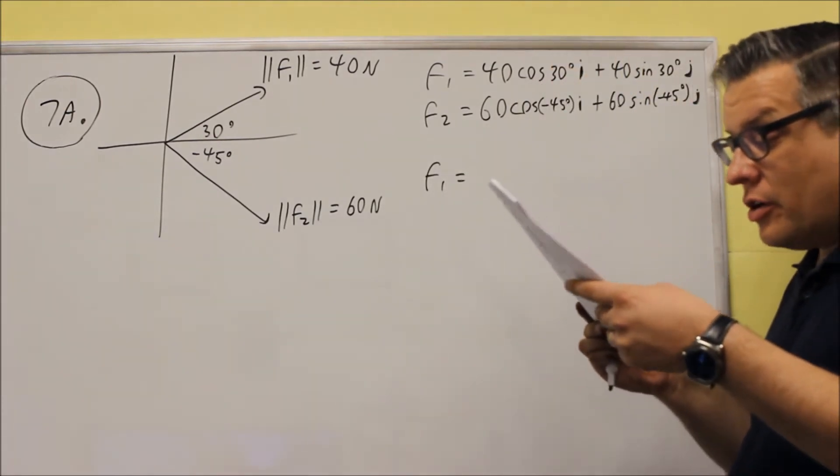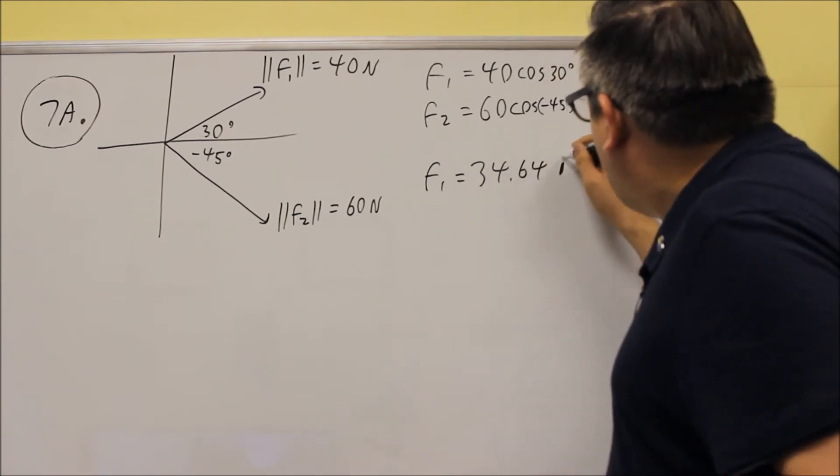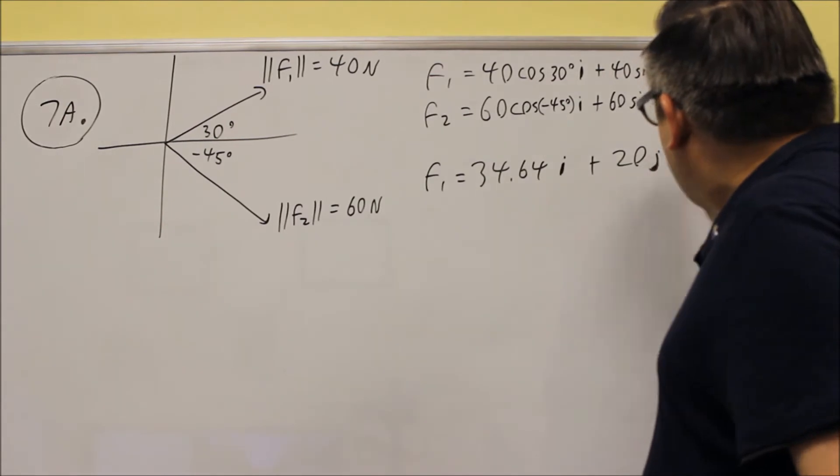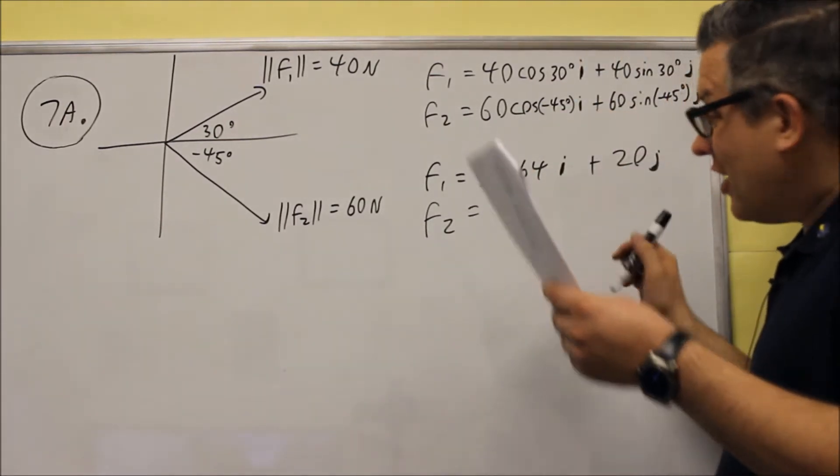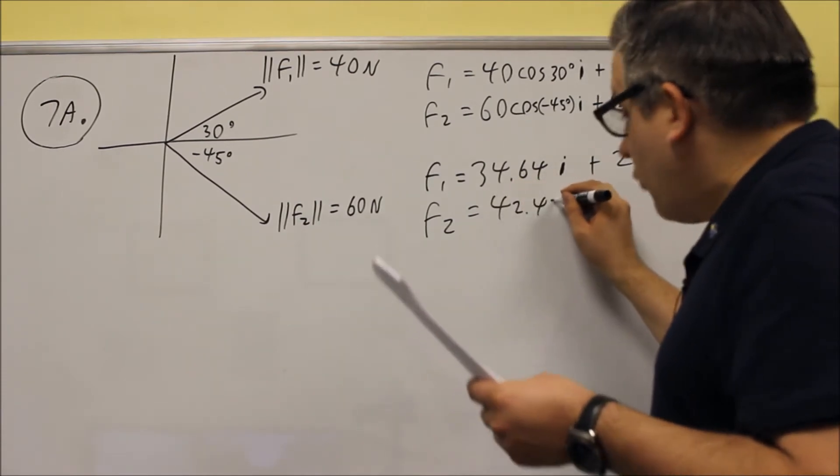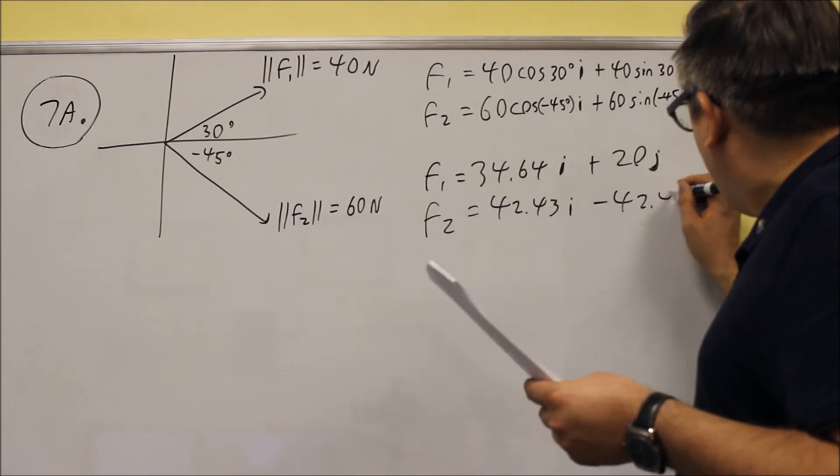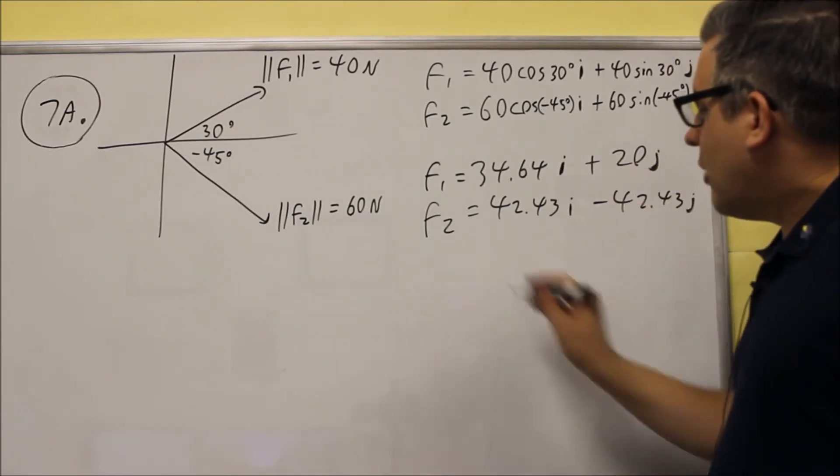So we'll put those into the calculator. And when you do, this is what you're going to get. 34.64i and then plus 20J. For F2, if you put that in your calculator with the negative, 42.43i minus 42.43j. So there's a minus that you end up with on that one.